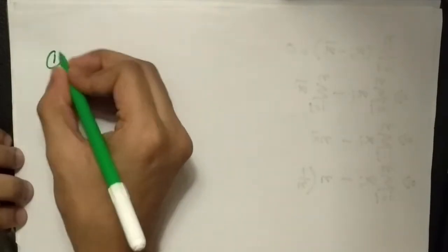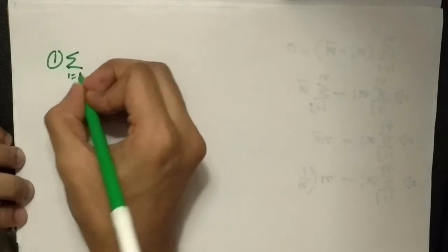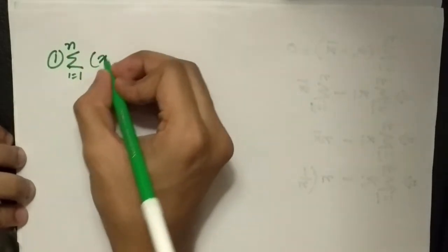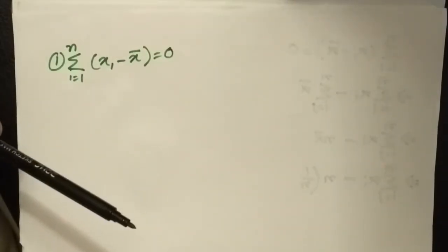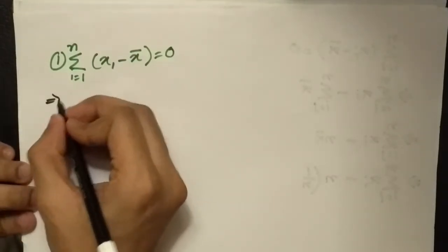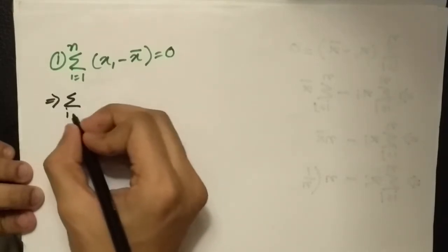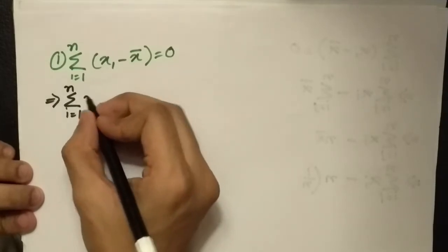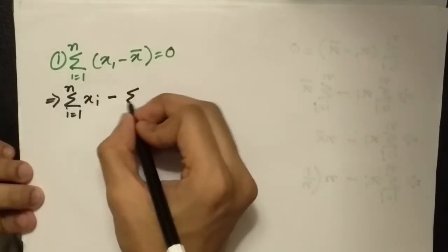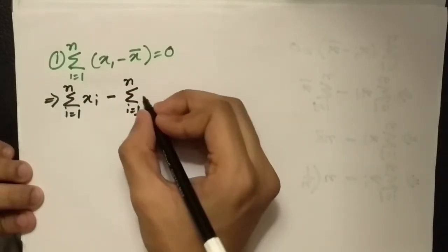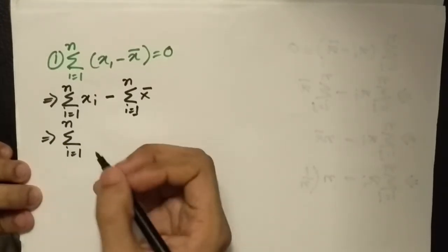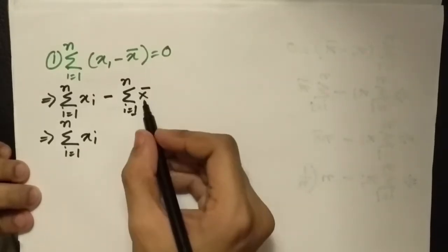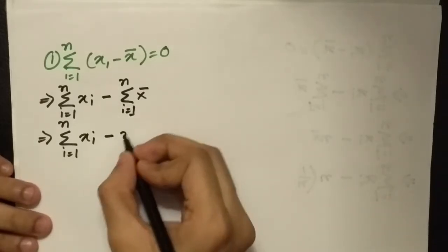The first equation says: summation from i = 1 to n of (xᵢ - x̄) equals zero. Let's prove this. We can write this as summation of xᵢ minus summation of x̄, which equals summation of xᵢ minus n·x̄.